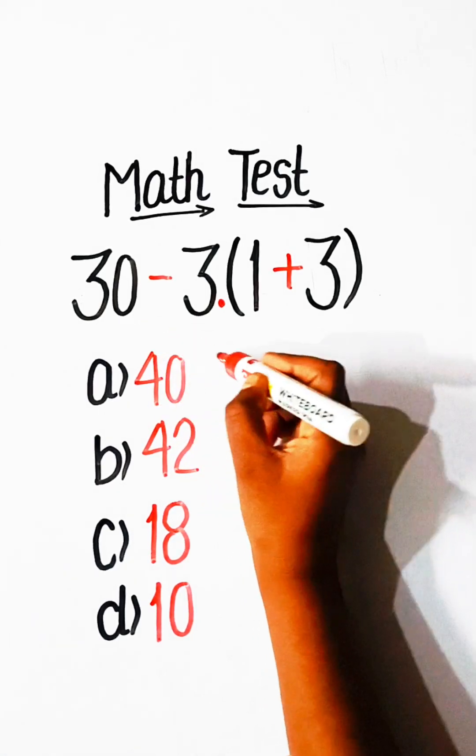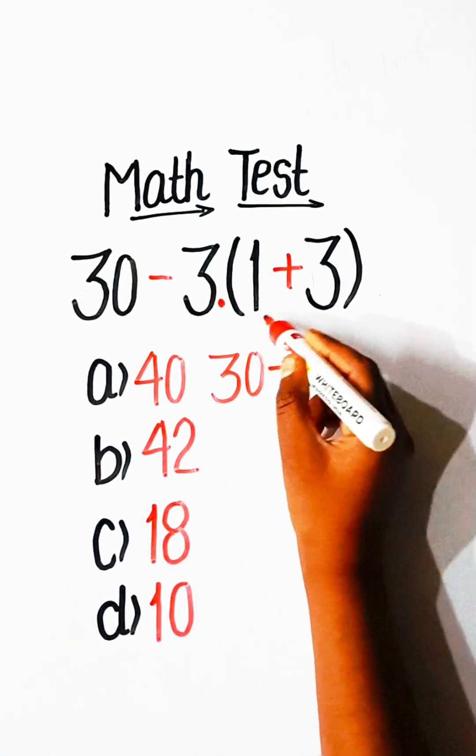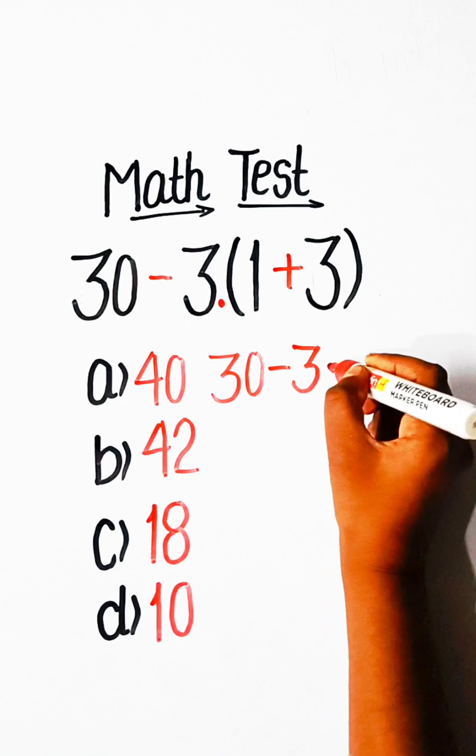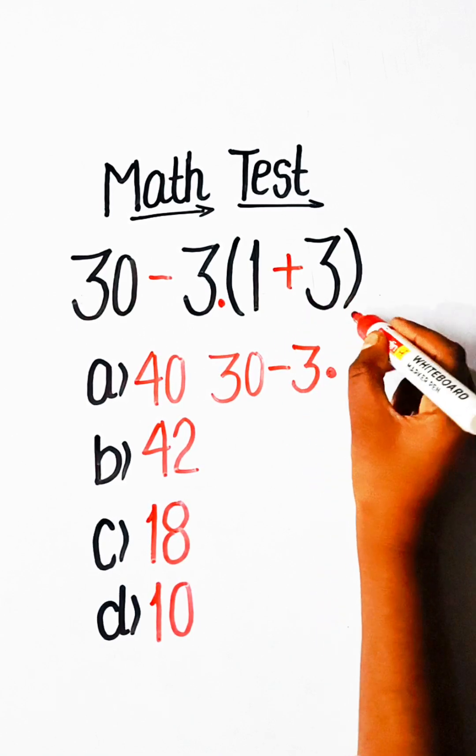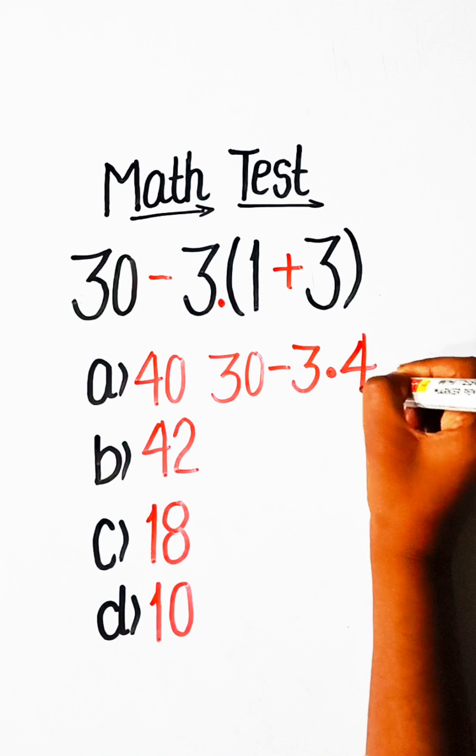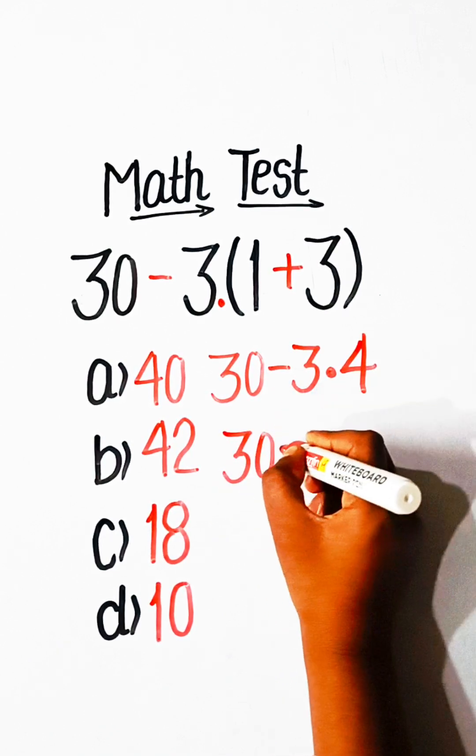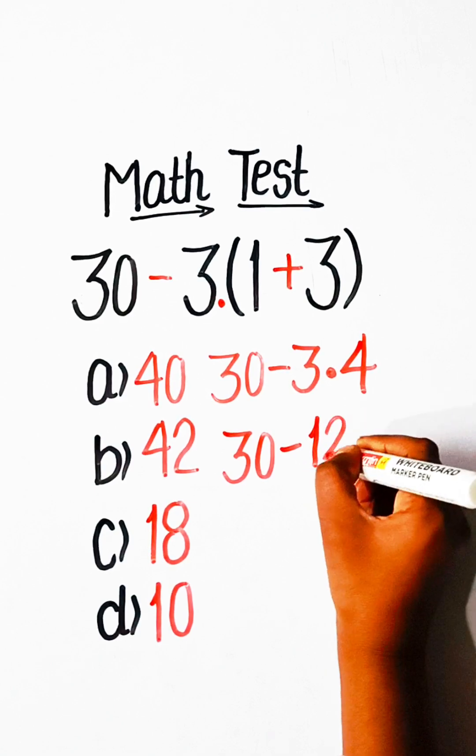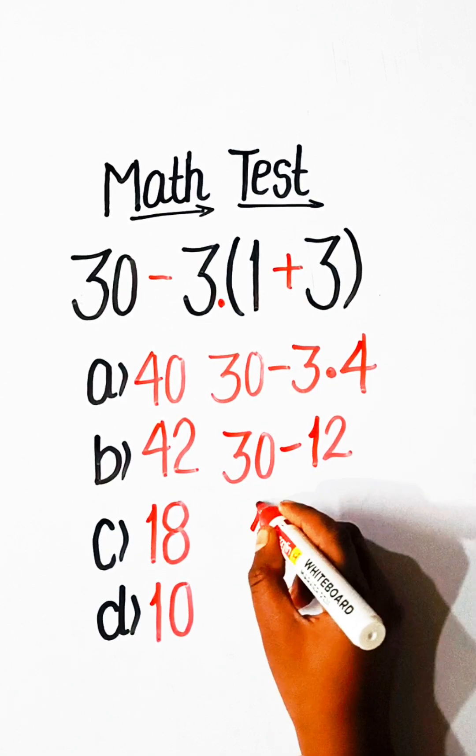So 30 minus 3 multiplied by 1 plus 3 is 4. We will write here 30 minus 3, 4s are 12, and 30 minus 12 is 18.